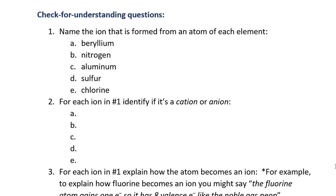Here are some check for understanding questions to see if that part of the video made sense. Use your notes to answer them. This concludes the lesson about ions. We discussed how positive and negative ions are formed, looked at dot structure diagrams of the ions, and discussed how to name them. Cations have the same name as the original atom, but anions have names that end with the suffix -ide.